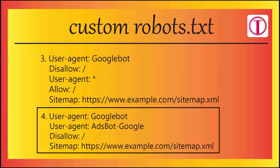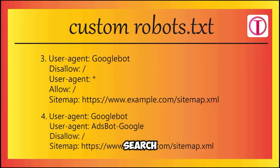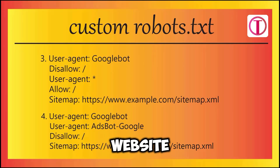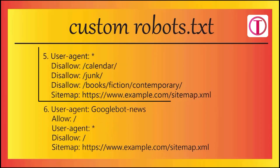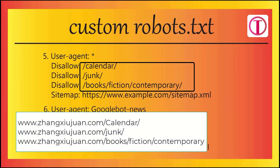For example four, 'User-agent: Googlebot' asks Googlebot to come to the website, and 'User-agent: AdsBot-Google' asks AdsBot Google to visit the website, with 'Disallow: /' saying not to index. In this case, all search engine bots can index your website except Googlebot and AdsBot Google.